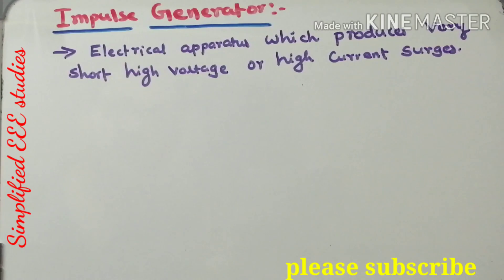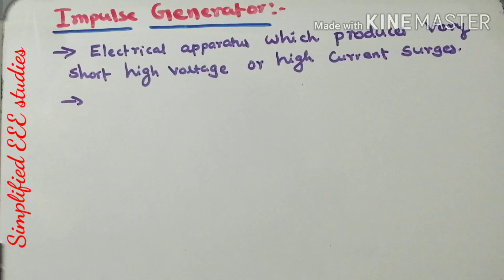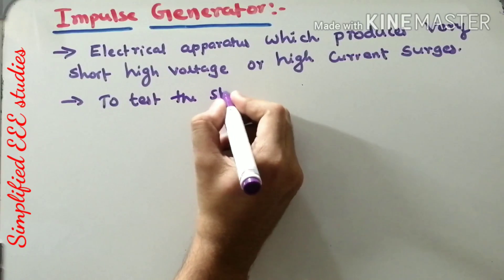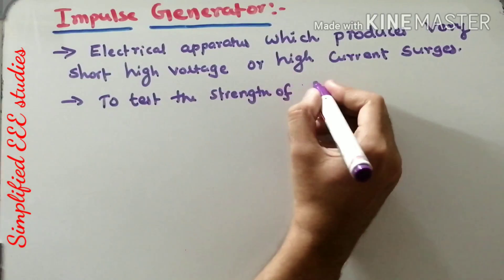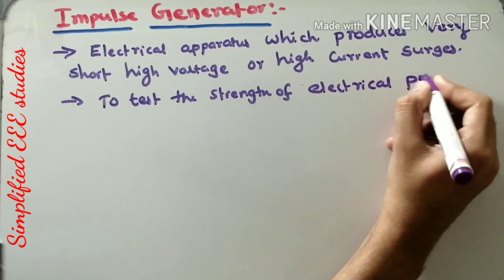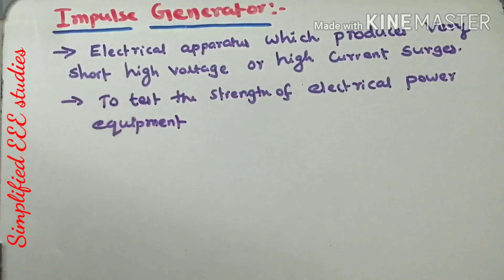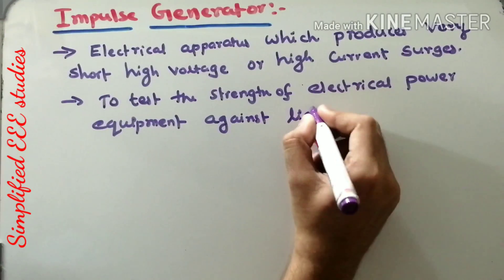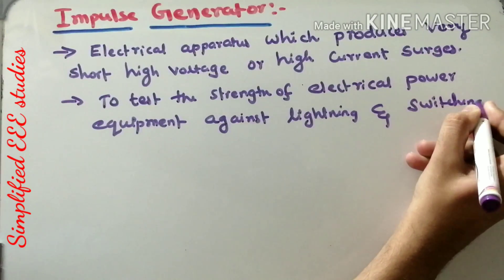Impulse voltage is having very short duration. The next question is: why do you require an impulse generator? The purpose is to test the strength of electrical power equipment against lightning and switching surges.